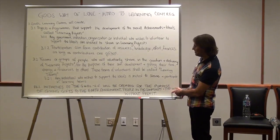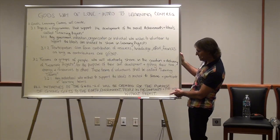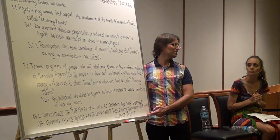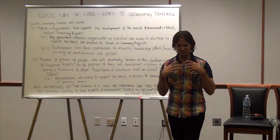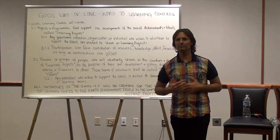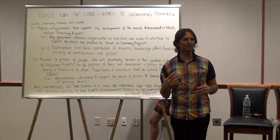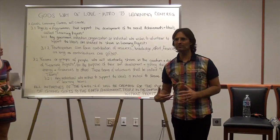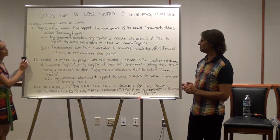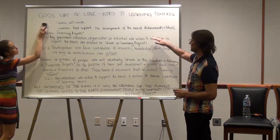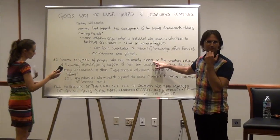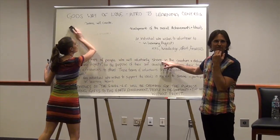All initiatives of the Learning Centre will be created for the purpose of giving gifts to the earth, to the environment, and to people in the community, without profit. That's our purpose — to just be an organisation that gives gifts. What will happen is if we deal with our own emotions about money and funds and resources, we'll receive enough gifts to be able to give gifts. That's what we've been doing in Australia now for some time. The first centre has been set up for a few years, and there are currently about 14 or 15 different teams in Australia — three in one location and about 13 in another.